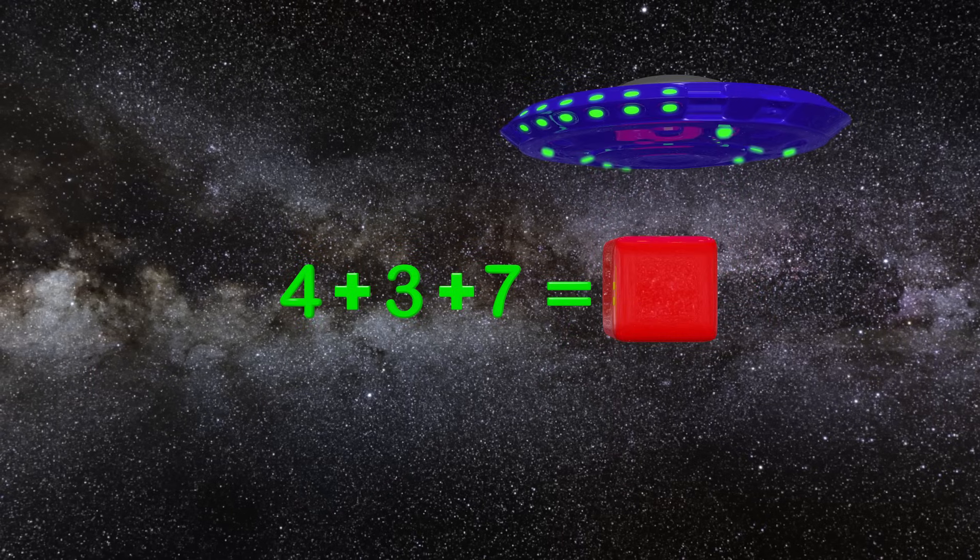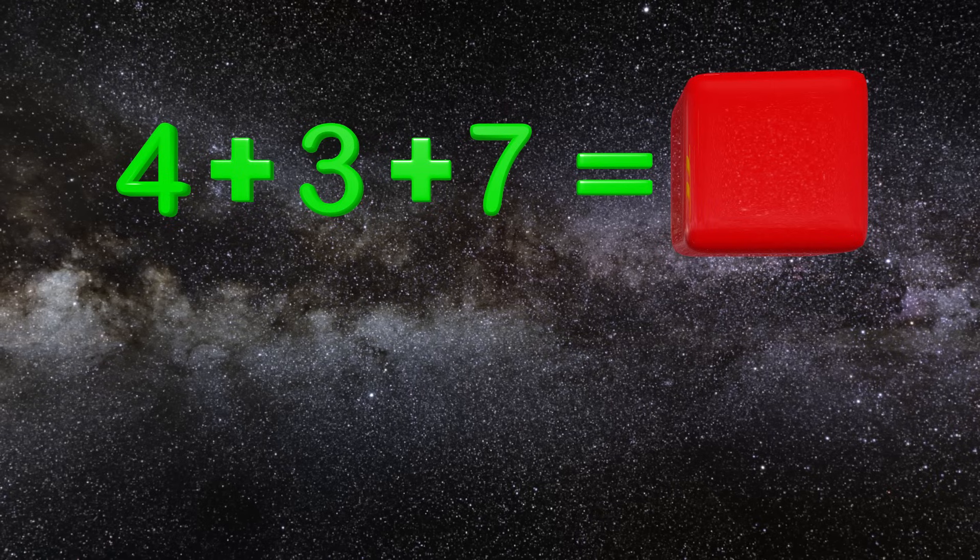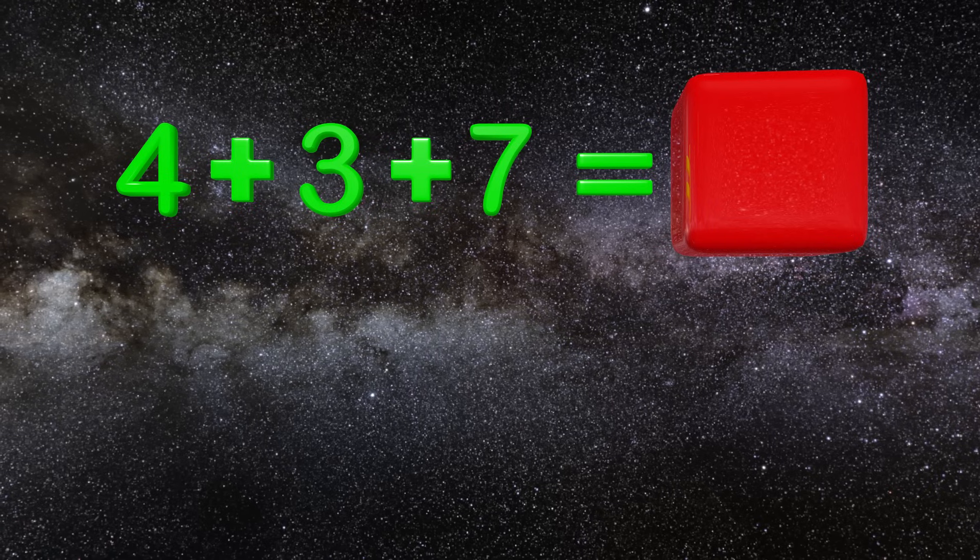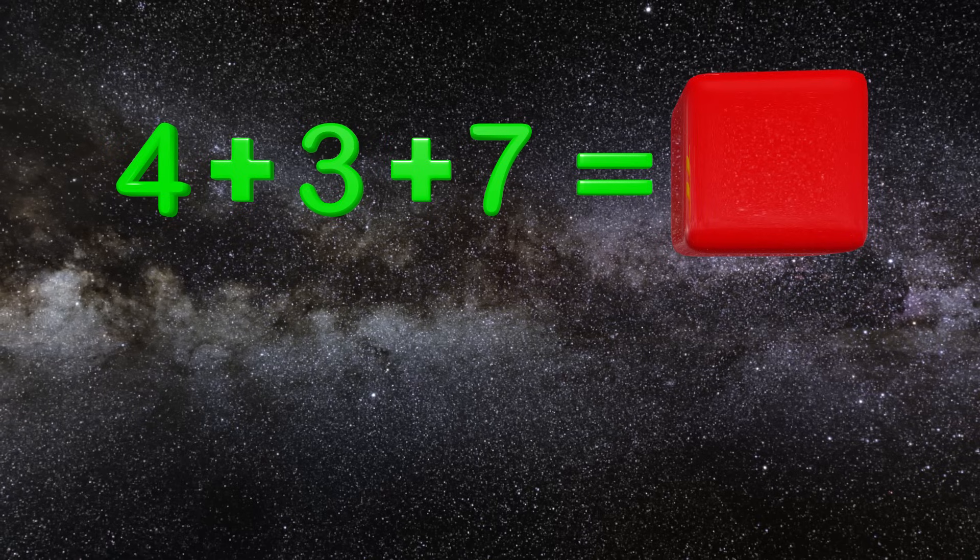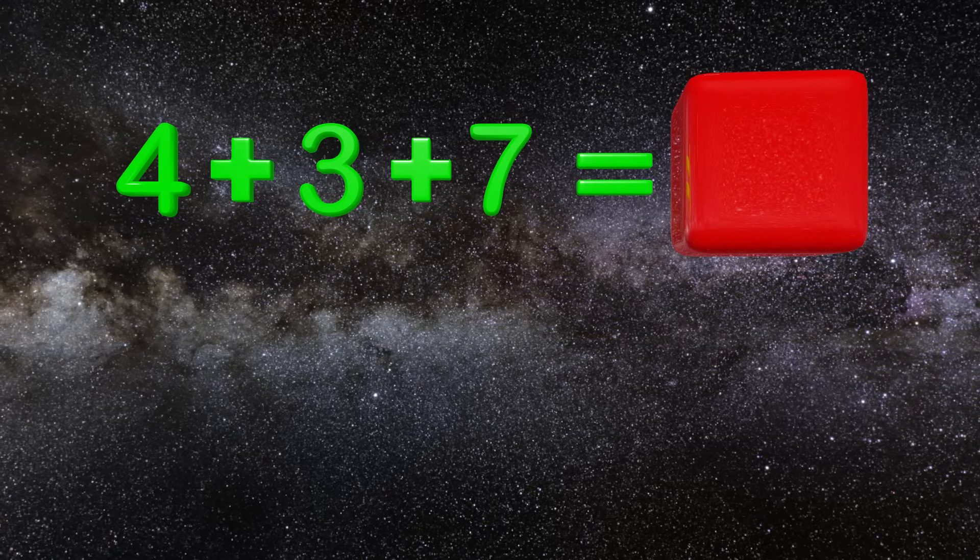Wait a minute, we just freed the 14 but now it is trapped again. It looks like we still need to look at another way of adding using the associative property. What is another way we can add this problem faster? Here is a hint. Look at the 3 and the 7.